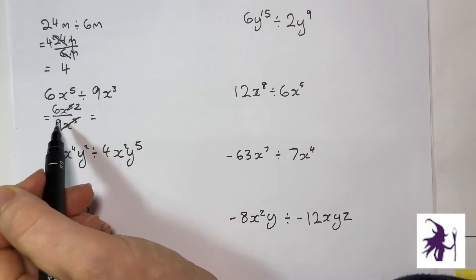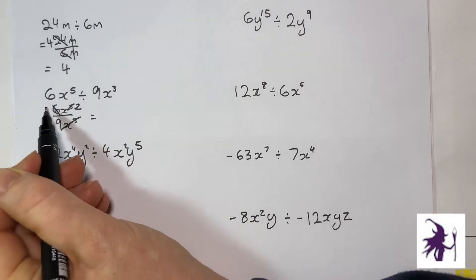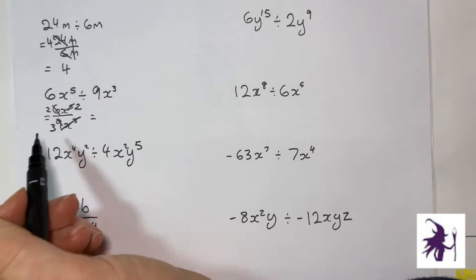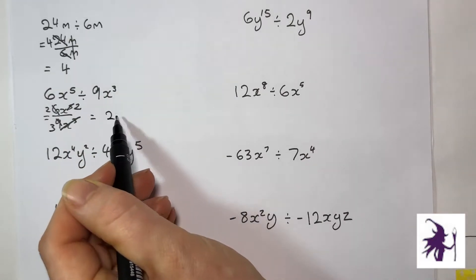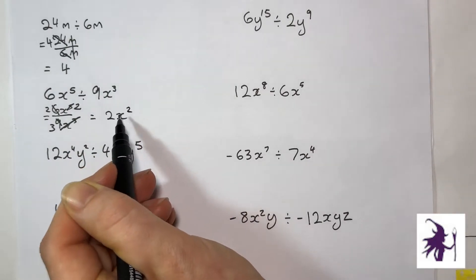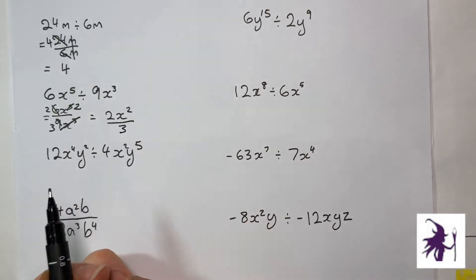And then with the 6 and the 9, I can divide both of them by 3, and I'm left with 2 here and I'm left with 3 here. And then, of course, I just have to be able to have been neat enough to read what I wrote. And there's my answer.